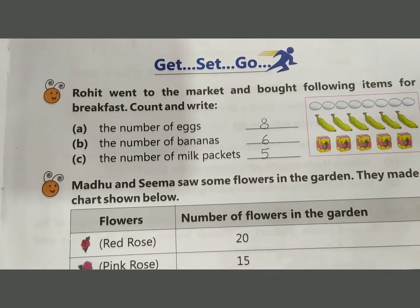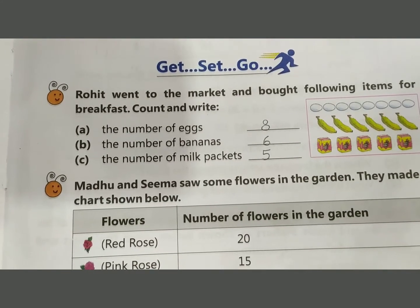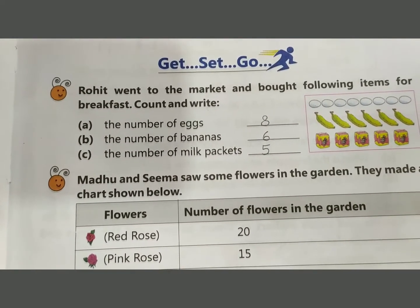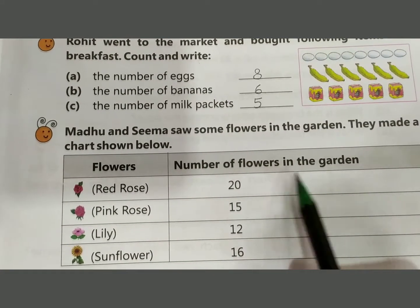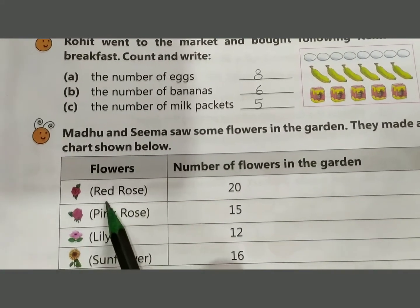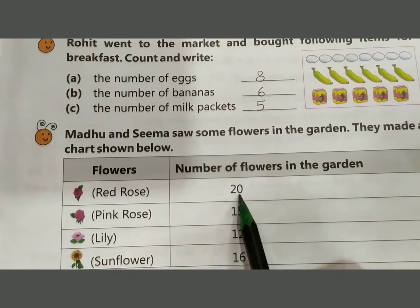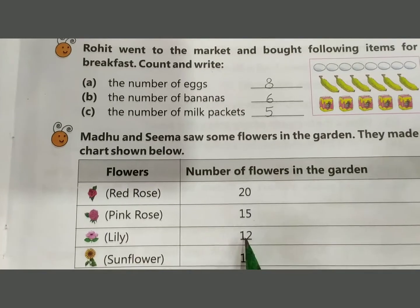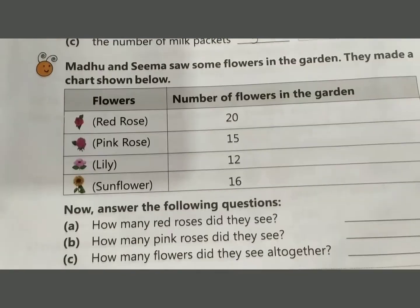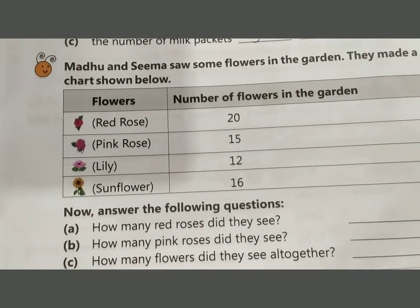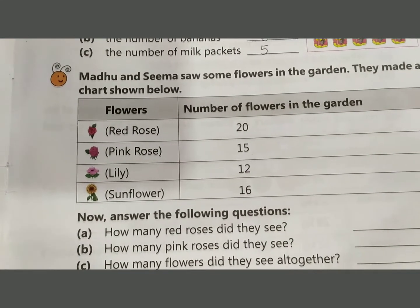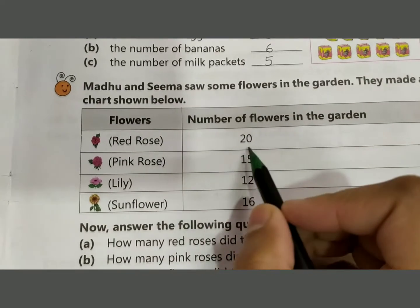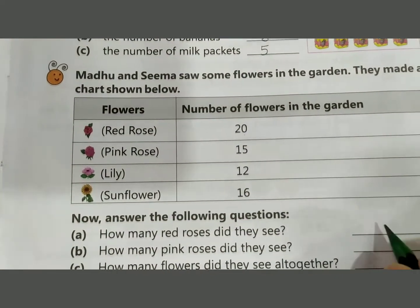Next question: Madhu and Seema saw some flowers in the garden. They made a chart showing the number of flowers. Red rose: 20, pink rose: 15, lily: 12, sunflower: 16. Now answer the following questions. How many red roses did they see? The answer is 20. Write 20.